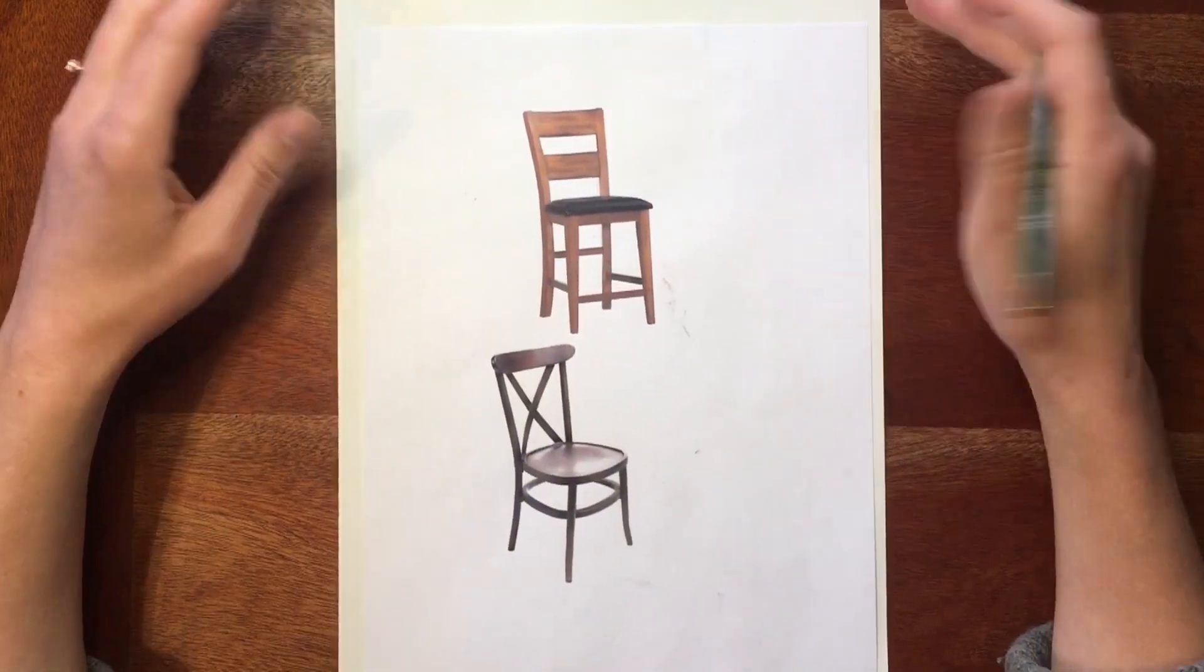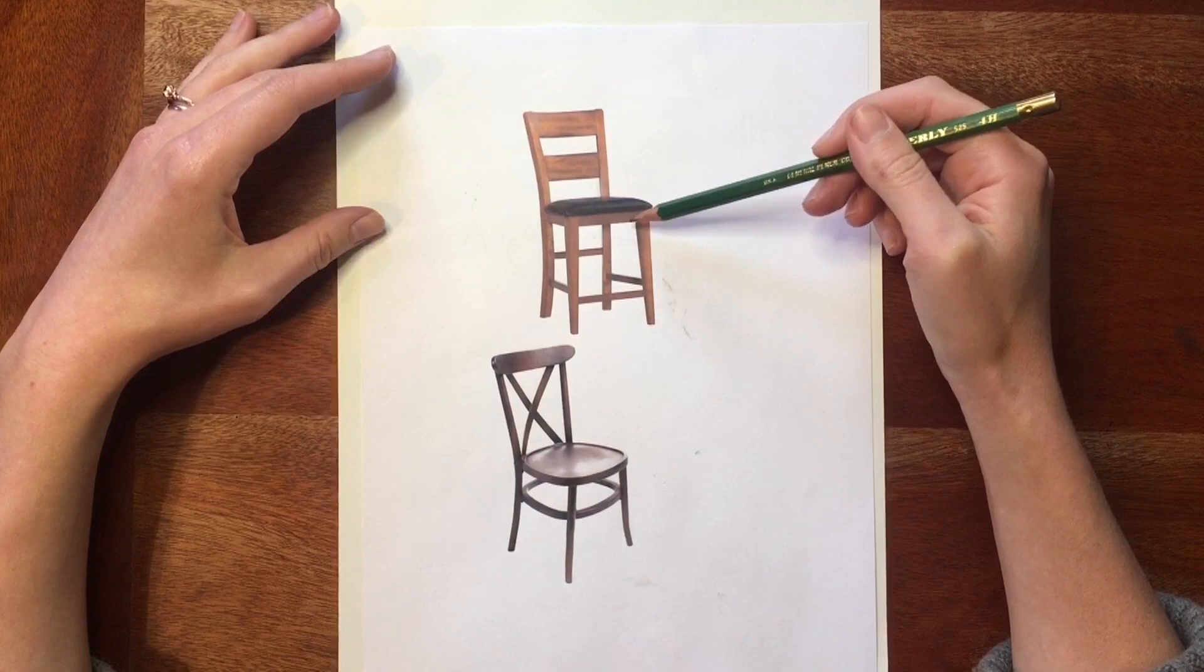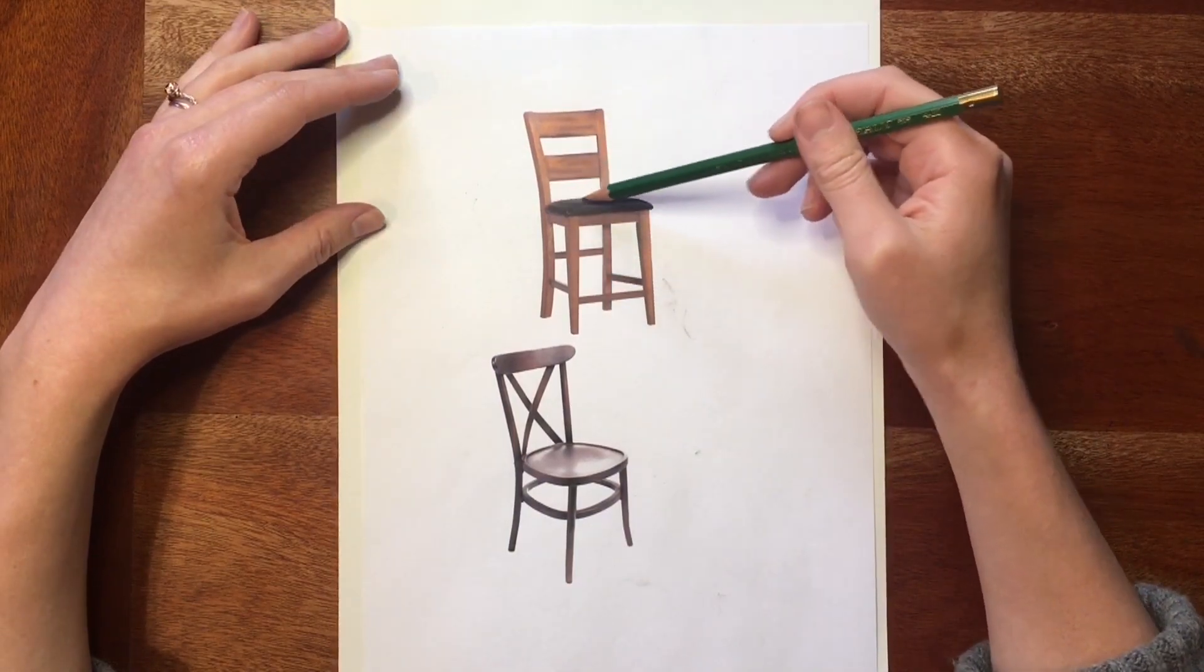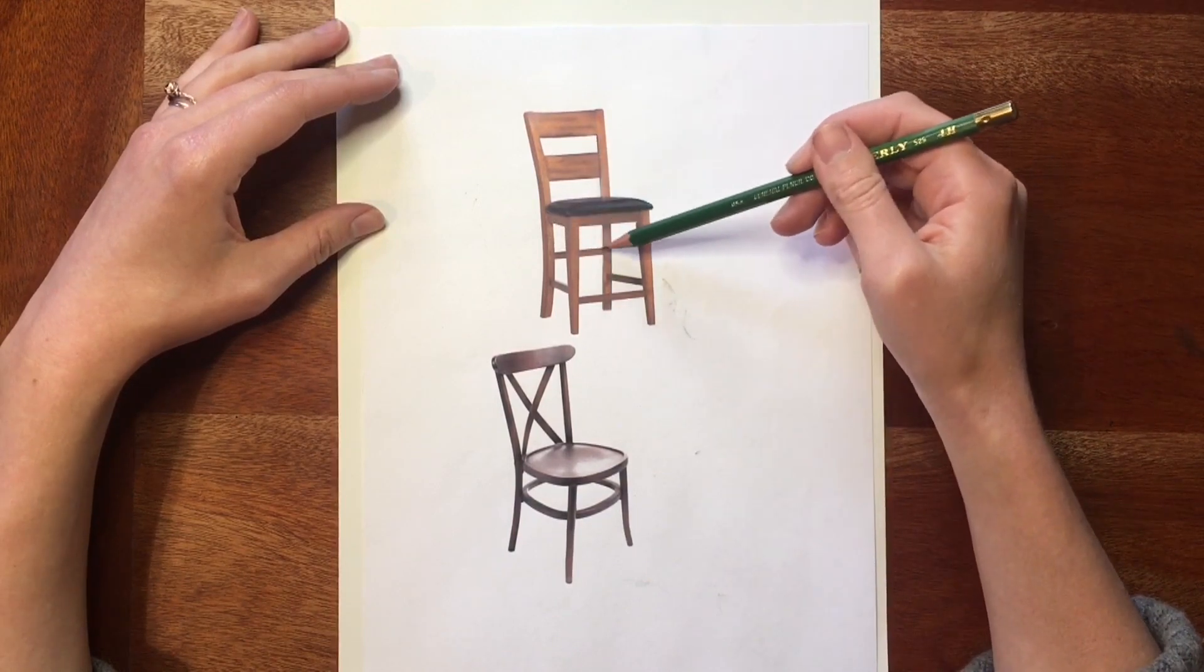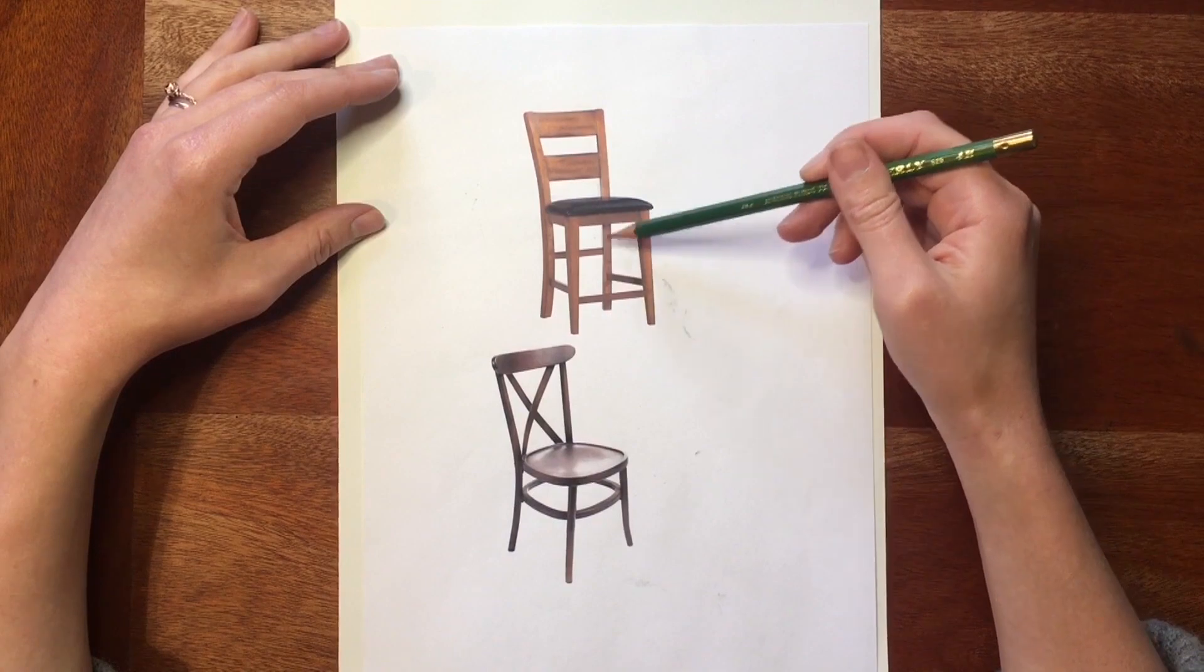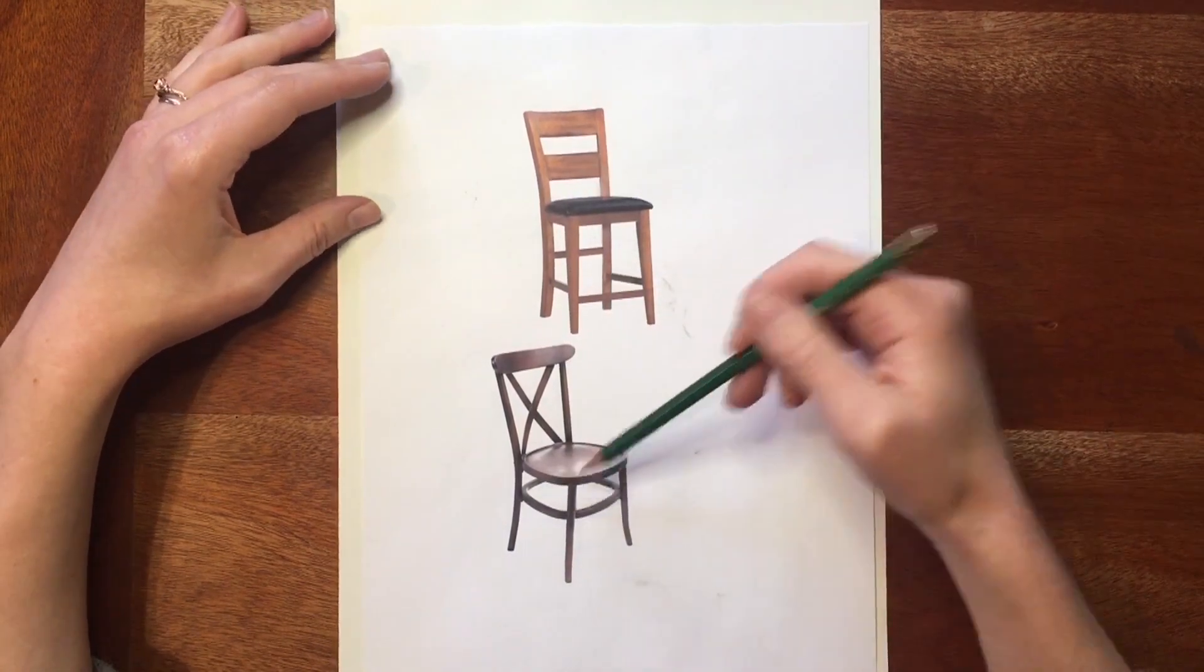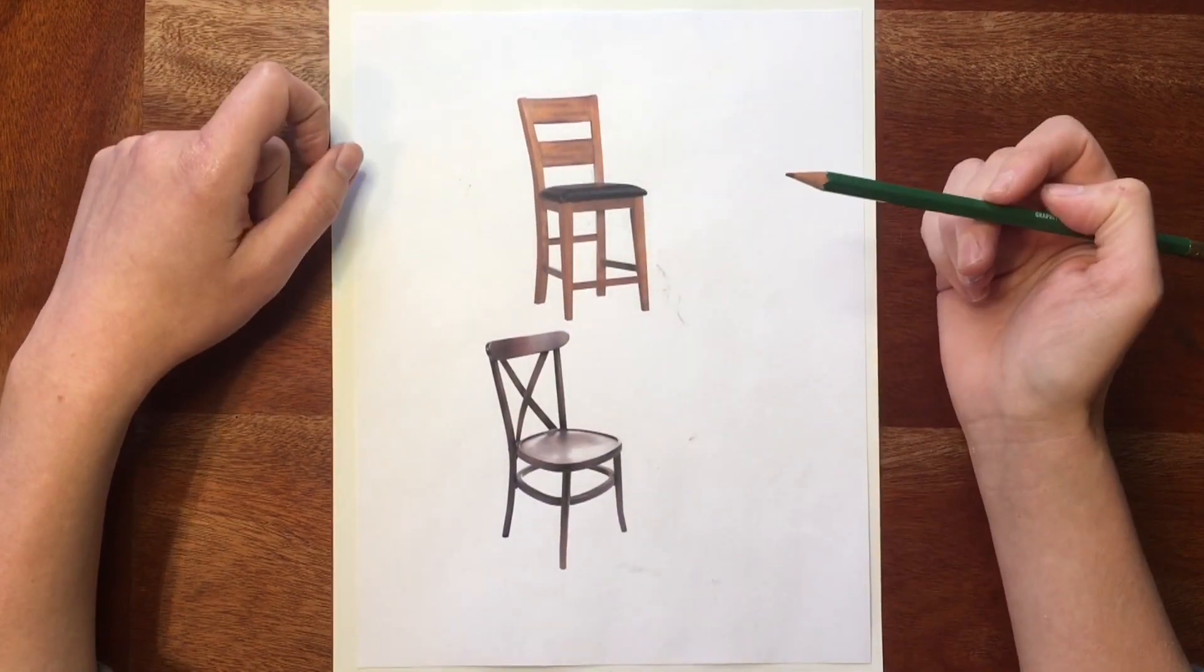So chairs are a really great example of negative space. You see we have the positive space, we have legs, we have the back, we have rungs, but then we also have negative space, which are these sort of nameless kind of shapes that exist between the subject of your image. There's another chair down here, and a chair is actually what we are going to be drawing today.